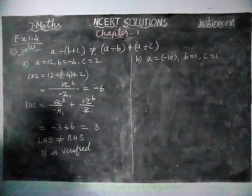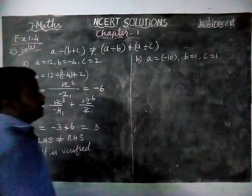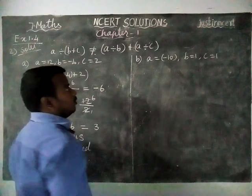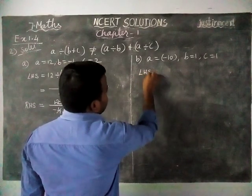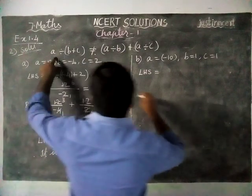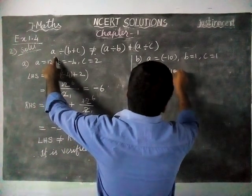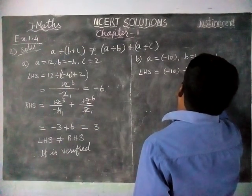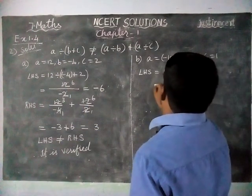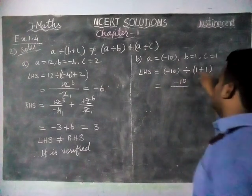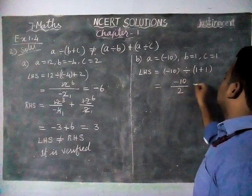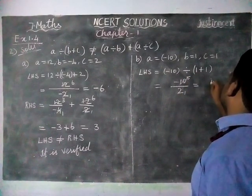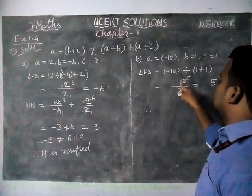Option B: A value is equal to minus 10, B value is equal to 1, C value is equal to 1. Left hand side equals A value minus 10, divide by B value 1 plus C value 1. So minus 10 divide by 1 plus 1 equals minus 10 divide by 2. 5 twos are 10, so answer is 5, and signs are different, so minus 5.